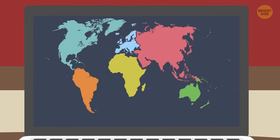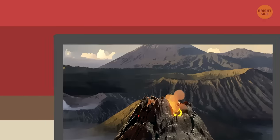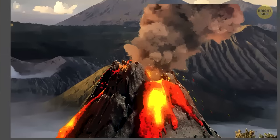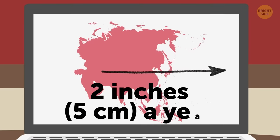Continental plates keep drifting at the same speed your fingernails grow. An underground activity that makes them move also causes volcanic eruptions and earthquakes. In total, tectonic plates end up traveling about 2 inches a year.